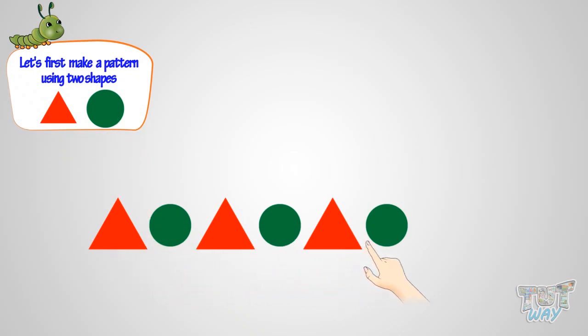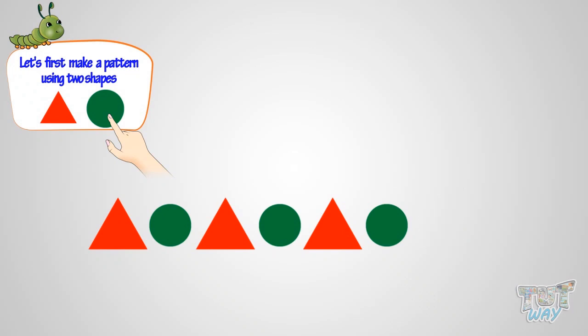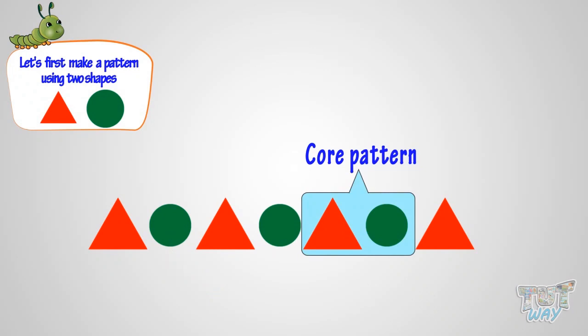So beautiful pattern! I want to continue. Which shape to use next? It seems a circle would be in the wrong order. I should use a triangle. Yeah! Now everything seems to be in order. The pattern that we are repeating here is a triangle, then a circle. Such a repeated pattern is called a core pattern.